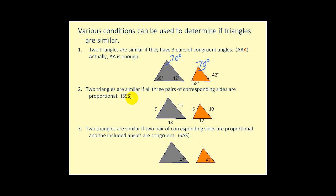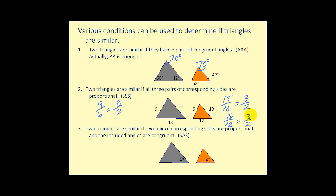Number two, two triangles are similar if all three pairs of corresponding sides are proportional. If we take one pair of corresponding sides — for example, 9 corresponds to 6 — that simplifies to a ratio of three to two. If all other corresponding sides maintain this ratio, the triangles are proportional and therefore similar. We can see that 15 to 10 simplifies to three to two, and 18 to 12 simplifies to three to two, confirming the triangles are similar.